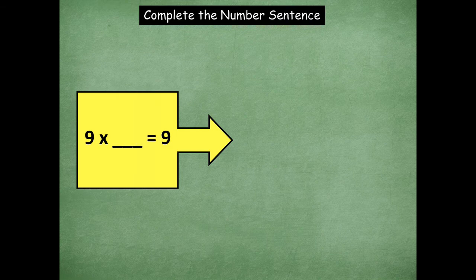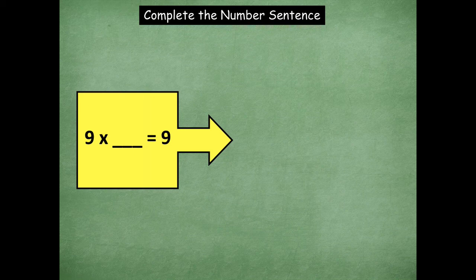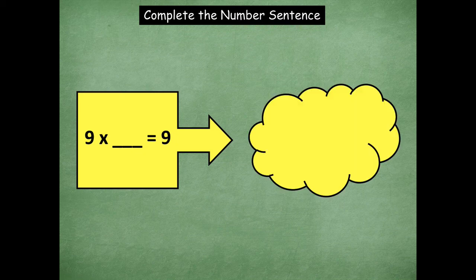9 times blank equals 9. So what's going to go in there? What do I multiply 9 by to get 9? 9 times 1 equals 9. Awesome.